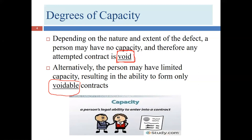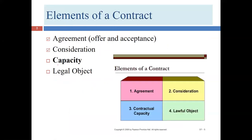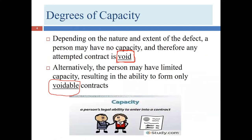Often, however, there is a way to address the problem. When capacity is missing, one element of contract law is missing, so there's no valid contract. But sometimes we have a voidable contract — not a contract exactly, but one with the potential to be treated like one. In that case, the person has limited capacity, and is entitled to change their mind and exit the contract.